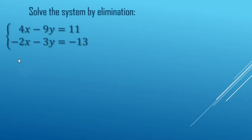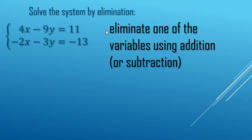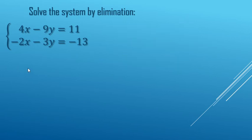We are going to solve this system of equations by elimination. Elimination is when you try and eliminate one of the variables using addition. In order for that to work, one of the pairs of coefficients on either the x's or the y's have to be opposites.